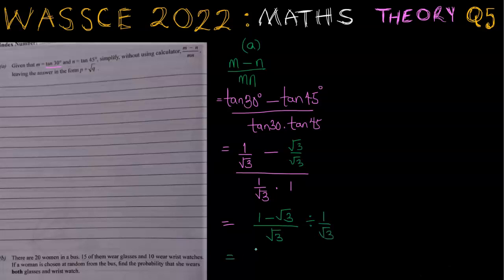This is going to simplify to 1 minus root 3 over root 3. This division is going to change to a multiplication, and I'm going to flip the numerator and denominator here. So this is root 3 over 1. Therefore, root 3 can cancel with root 3. And my answer is going to be 1 minus root 3. We can see here that our answer is in the form p plus root q. This is the final answer.